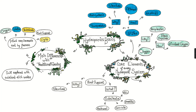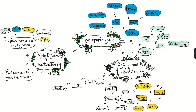After that, we have the nutrients, which support plant growth and health. The most common ones are the famous NPK, which refers to nitrogen, phosphorus, and potassium.